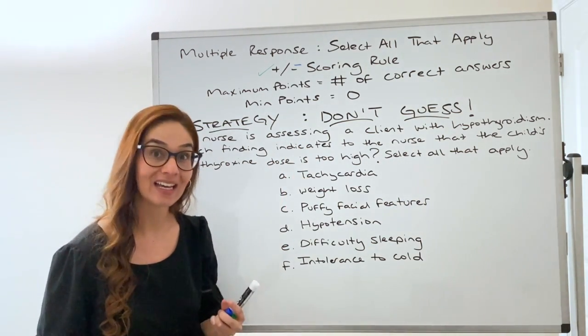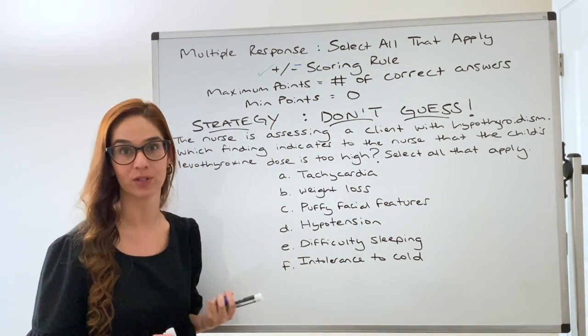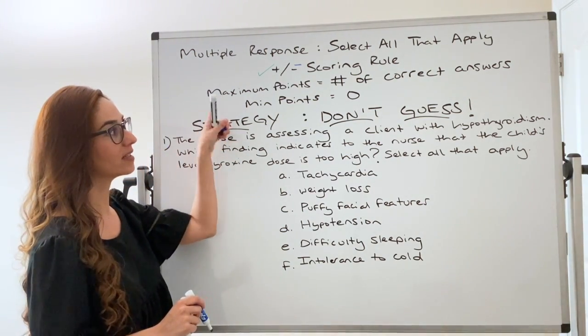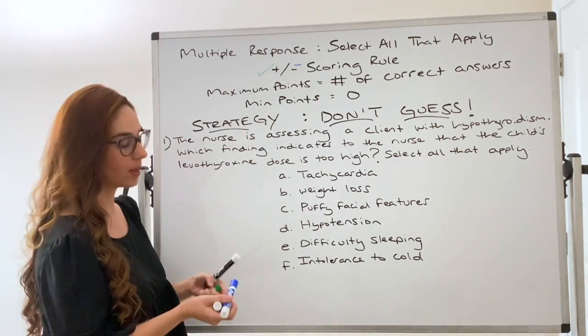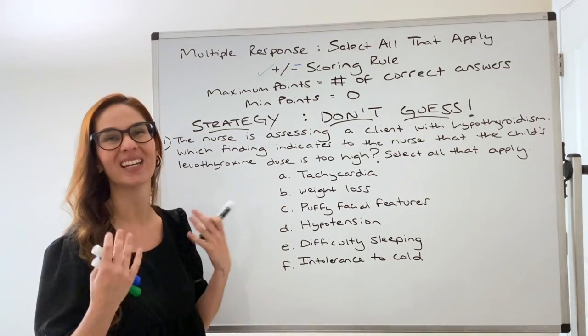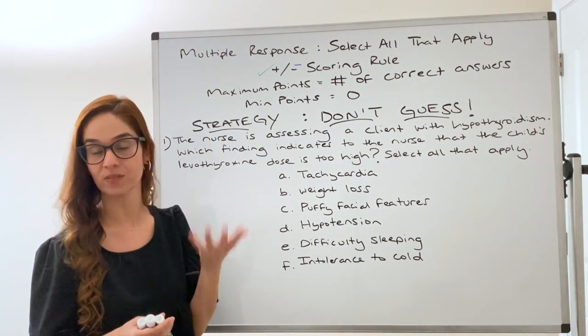So that's why a good strategy is to only answer absolutely what you know. Because if you guess and you guess wrong, remember it takes a point away for every wrong answer. So remember your maximum amount of points is the number of correct answer choices. Your minimum amount of points is zero. It's never going to take you into a negative point deduction. Your minimum is zero.